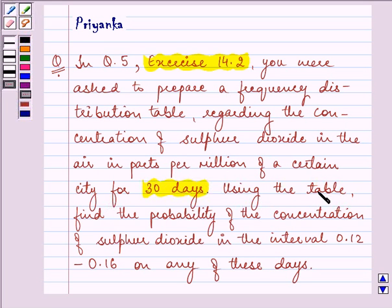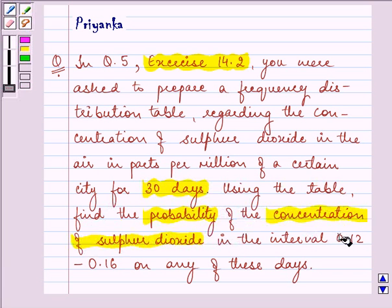Using the table now find the probability of concentration of sulfur dioxide in the interval 0.12 to 0.16 on any of these days.